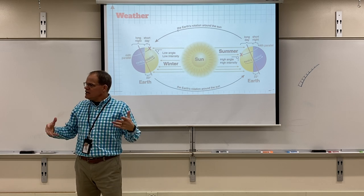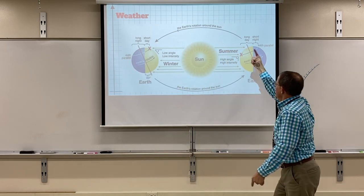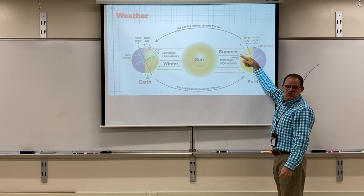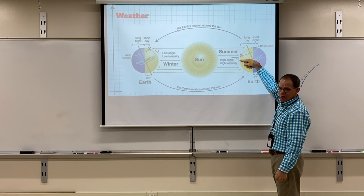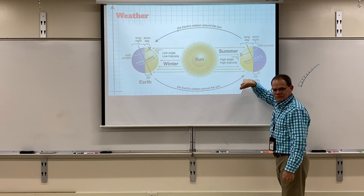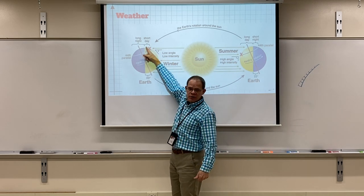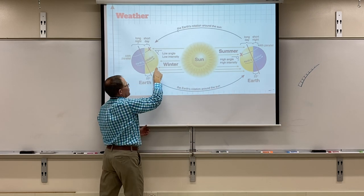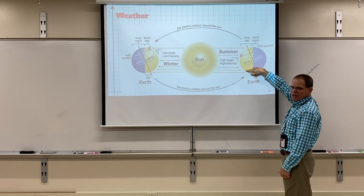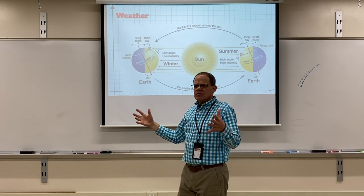Right now we're in winter; in Australia it's summer. Six months from now we'll be in summer and Australia will be in winter. Conduction, convection, and radiation explain an enormous amount of our weather. When the sun shines in the midwest the air rises and wind blows in underneath. Low-pressure regions have wind blowing away; high-pressure regions have wind blowing toward them. All of our weather is explained by convection, conduction, and radiation.